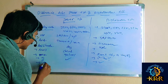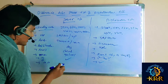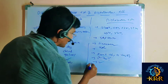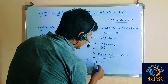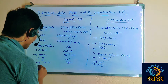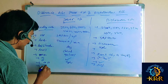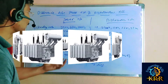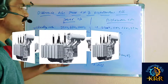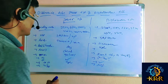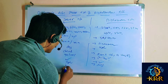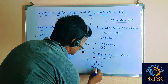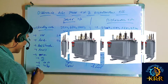If you go for cost, the cost of the power transformer is high, and the cost of the distribution transformer is less. If you go for the size, the power transformer size is also high compared to the distribution transformer. The distribution transformer size is less.